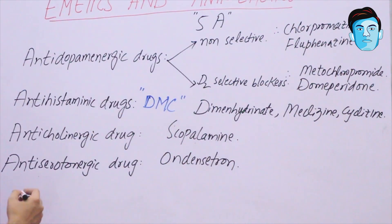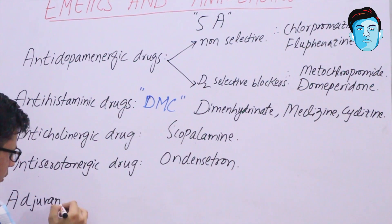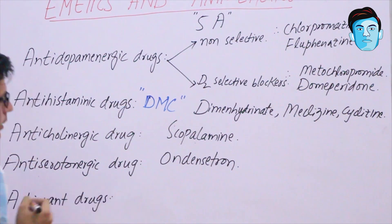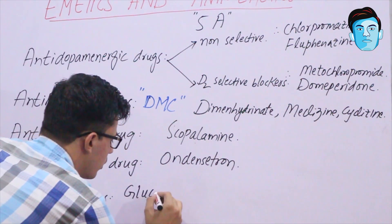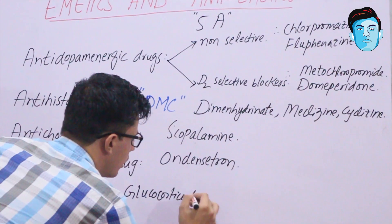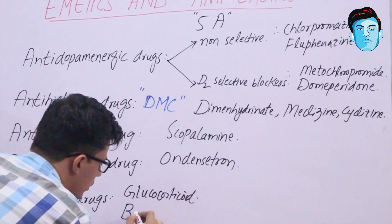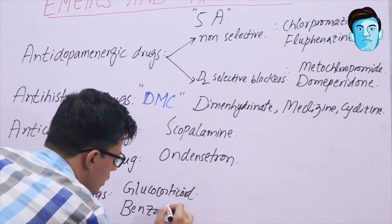The fourth A stands for anti-serotonergic drugs, which include ondansetron. The fifth and final A stands for adjuvant drugs, which include two important classes: glucocorticoids and benzodiazepines.